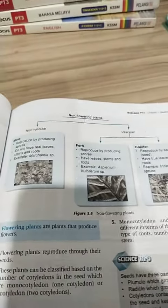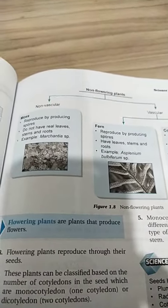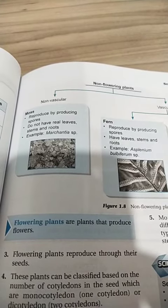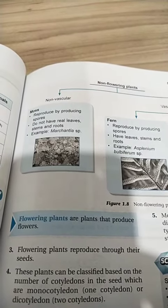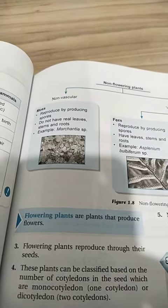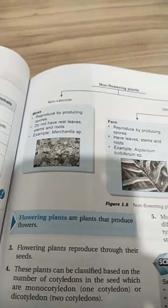Non-flowering plants include non-vascular and vascular types. Non-vascular moss reproduces by producing spores. It does not have real leaves, stems, and roots. For example, Marchantia sp.